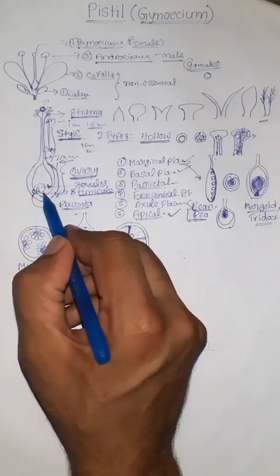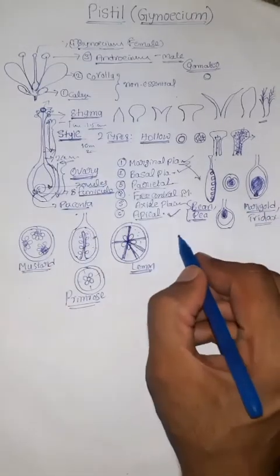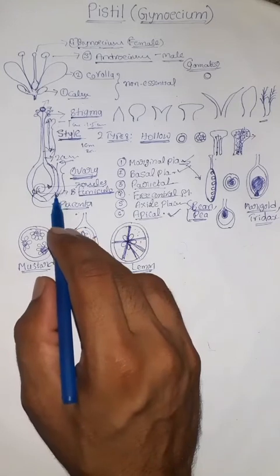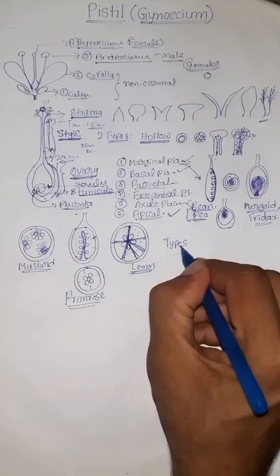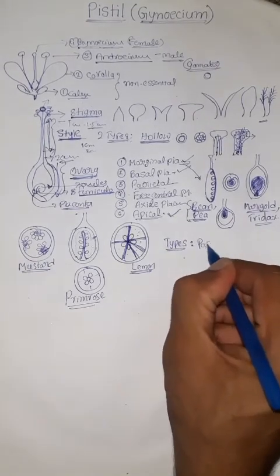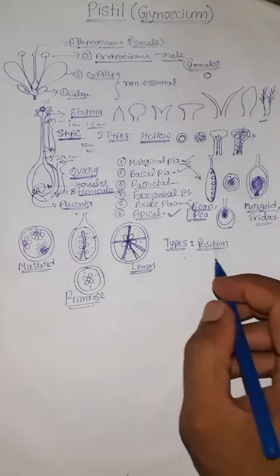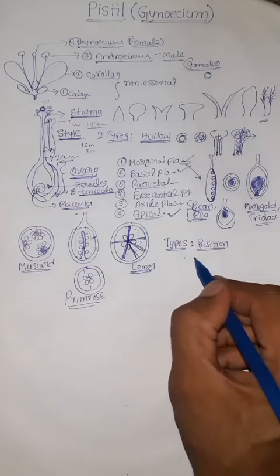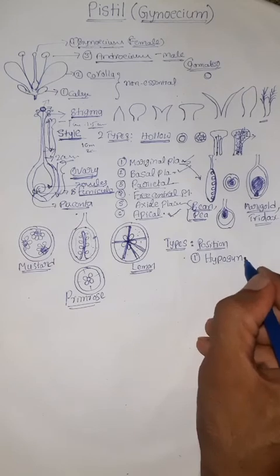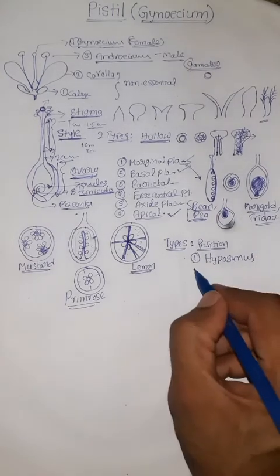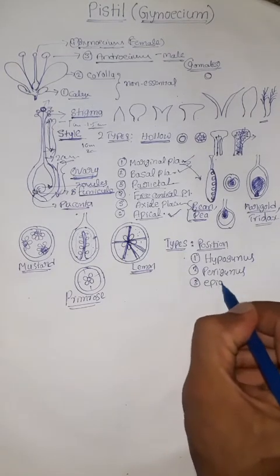Based on the position of the ovary, we have three types of flowers or ovary types — hypogynous flowers, perigynous flowers, and epigynous flowers. The position of the three lower whorls determines the position of the fourth whorl, that is, the Gynoecium.